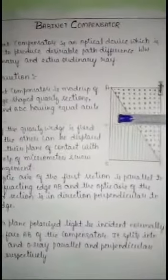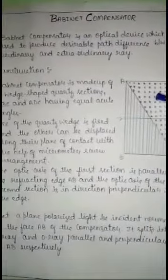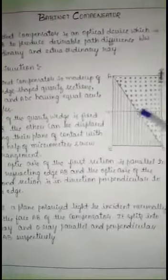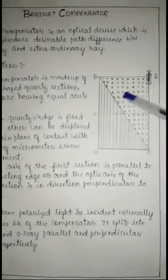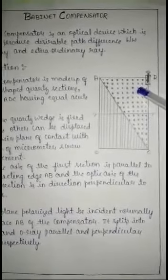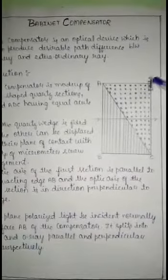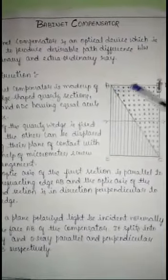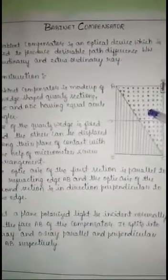Construction of the Babinet Compensator. It is made up of two wedge-shaped quartz sections, ABC and ADC, having equal acute angles. One of the wedges is fixed and the other can be displaced along their plane of contact with the help of a micrometer screw arrangement. The optic axis of the first section is parallel to the refracting edge AB, and the optic axis of the second section ADC is perpendicular to the refracting edge.